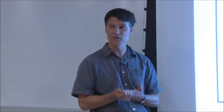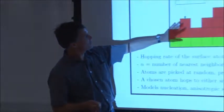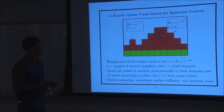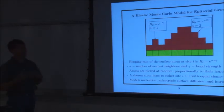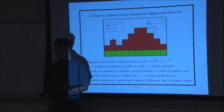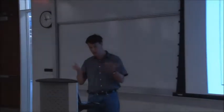Even though this model is very simple, it alone can capture many basic features of surface diffusion. For example, you can understand surface diffusion, and if you add deposition you can include nucleation and stochastic effects. Most surfaces are highly anisotropic — the surface energy is highly anisotropic — and that's not easy to model, whereas these kinds of models naturally encode that behavior.